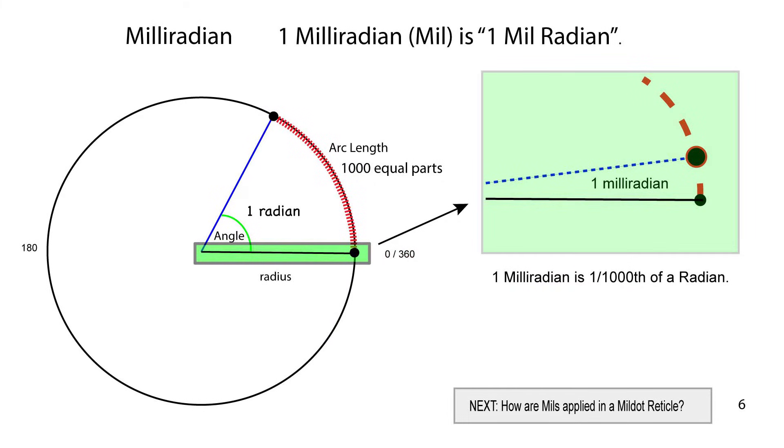On the left hand side, we have a full circle and we have the angle at the center of the circle, which is subtended or created by the arc length on the circumference of the circle between those two dots on the segment of the arc length. And within that arc length, there are 1000 equal parts. On the right hand side in that rectangle, that's an exaggerated blow up of taking one milliradian from one radian.